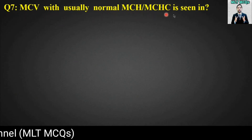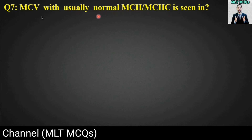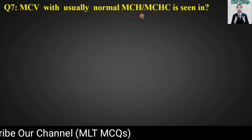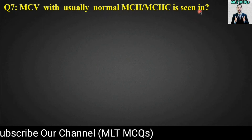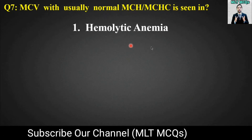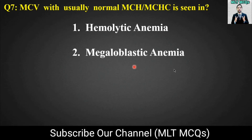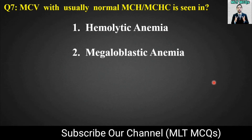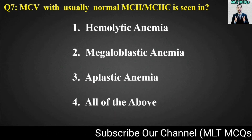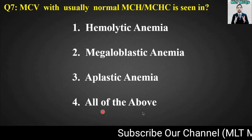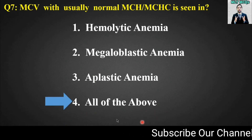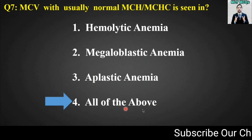MCQ number seven: Increased MCV with usually normal MCH and MCHC is seen in which condition? Options are: hemolytic anemia, megaloblastic anemia, aplastic anemia, or all of the above. The right answer is option number four — all of the above.